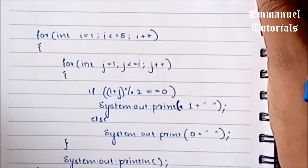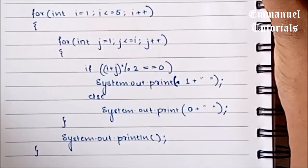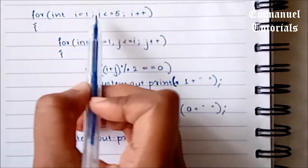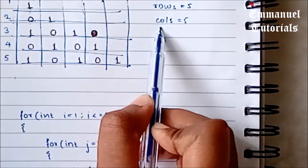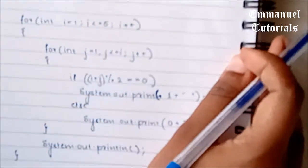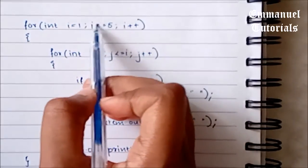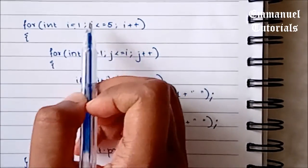So we will see how to write the code for it. Now here, since we had 5 rows, the total number of rows is 5 and the total number of columns is 5. Since we have 5 rows, I have iterated the outer loop from 1 to 5.